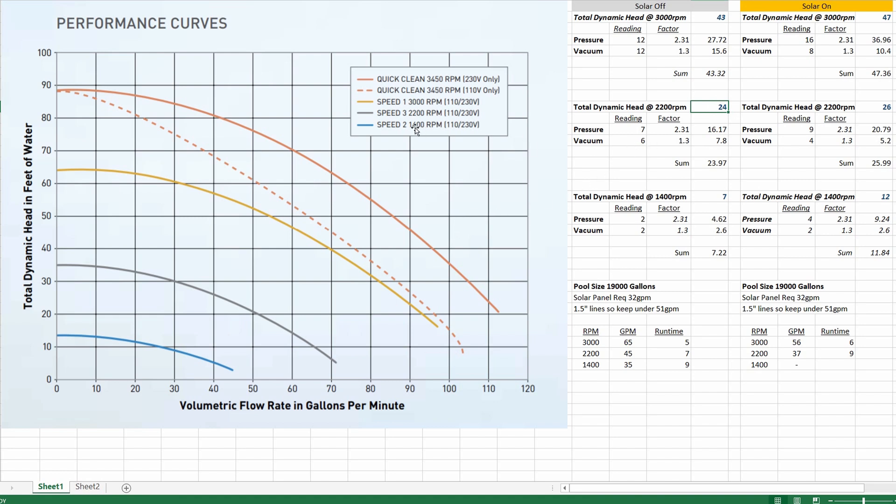So similarly we're going to look for the 2200 RPM curve here which is the gray line, look for 24, track that across and then go down and that gives us about 45 gallons per minute.